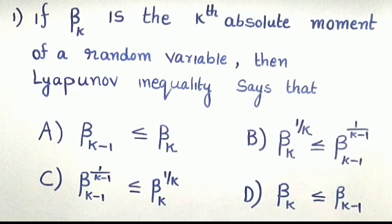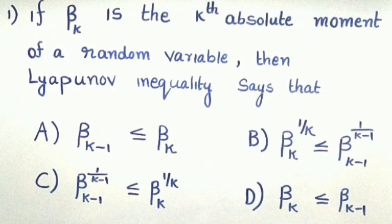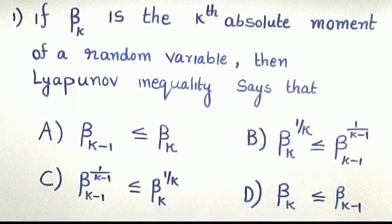Question number 1: If beta_k is the k-th absolute moment of a random variable, then Lyapunov's inequality states — Option A, Option B, Option D: beta_k less than or equal to beta_{k-1}. Answer: Option C.